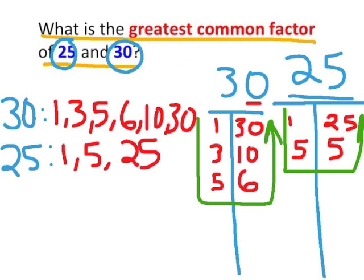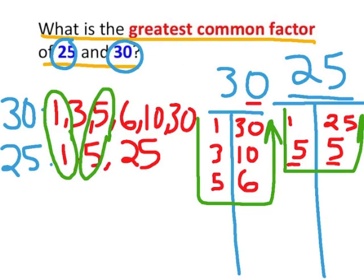Note that I did not list the factor 5 twice — we just need to list it once. Although 5 times 5 is equivalent to 25, we only list it one time. Comparing our factors, which factors do they both share? We can see that 1 is a factor that both 30 and 25 have. Is 3 a factor? It is a factor of 30, but not of 25, so it is not a common factor. I also see a 5 here — this is a common factor of both 30 and 25.